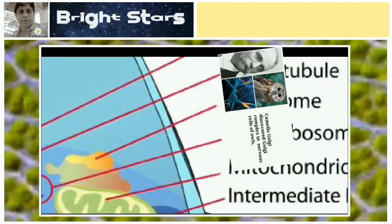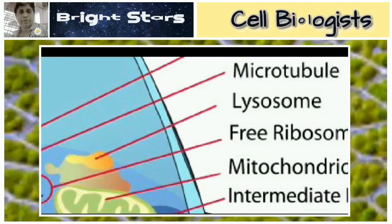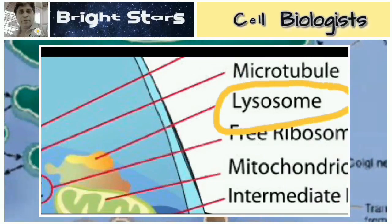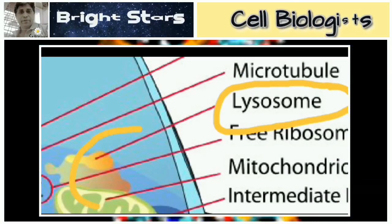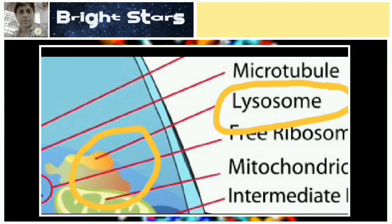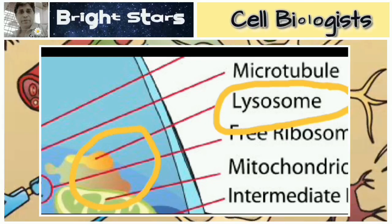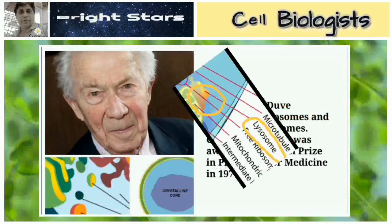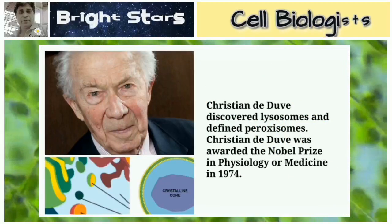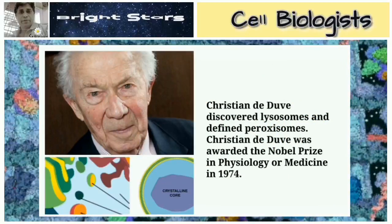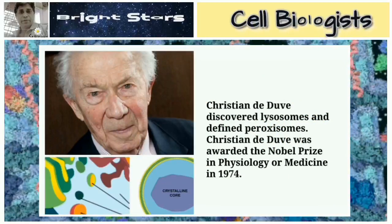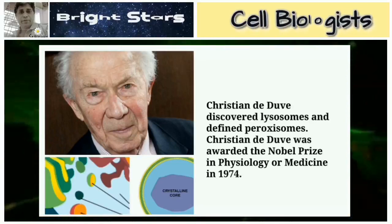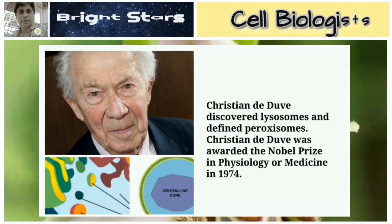The digestive organelle of the cell is the lysosome, which consists of different kinds of digestive enzymes. Christian de Duve discovered lysosomes and defined peroxisomes. Christian de Duve was awarded the Nobel Prize in Physiology or Medicine in 1974.